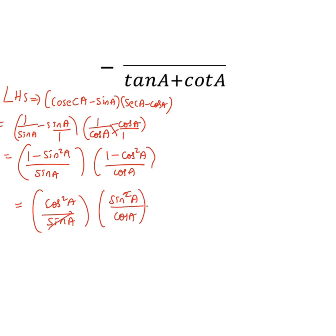Here sin and the square will get cancelled, cos and the square will get cancelled. So we can write it as sin A into cos A. We will call this equation 1.